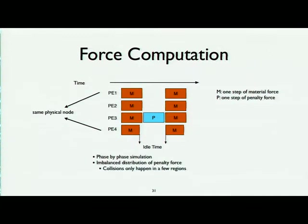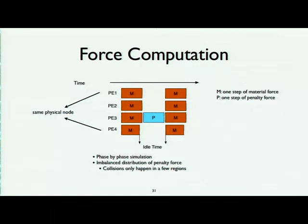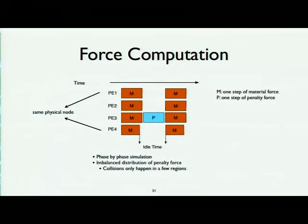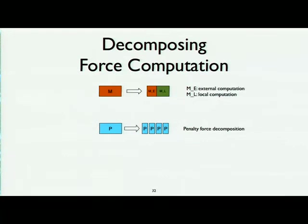We've talked about optimizations in the collision detection phase. There's also the force computation phase, which includes material force and penalty force as a response to collisions. In a typical step-by-step simulation, you have material force first, then penalty force, then another step of material force. Since penalty force is associated with collisions that only happen in a few regions of the cloth, the penalty force is not well balanced — only one processor may have penalty force work while others are idle, creating significant load imbalance.